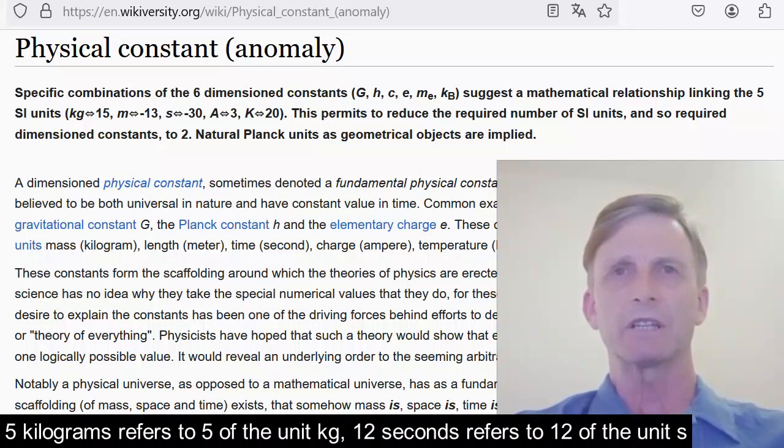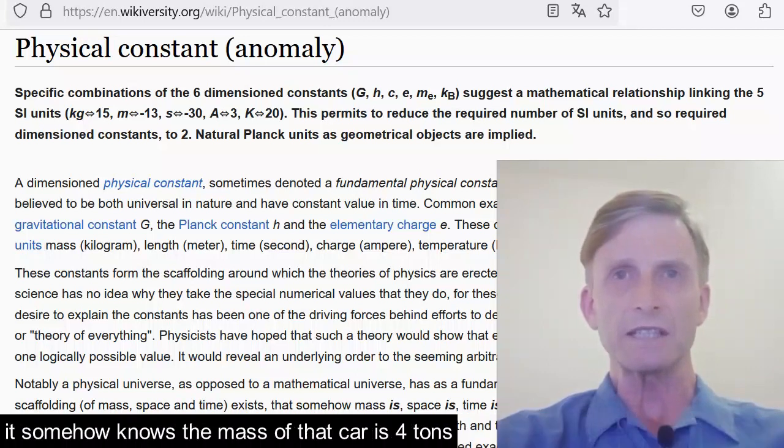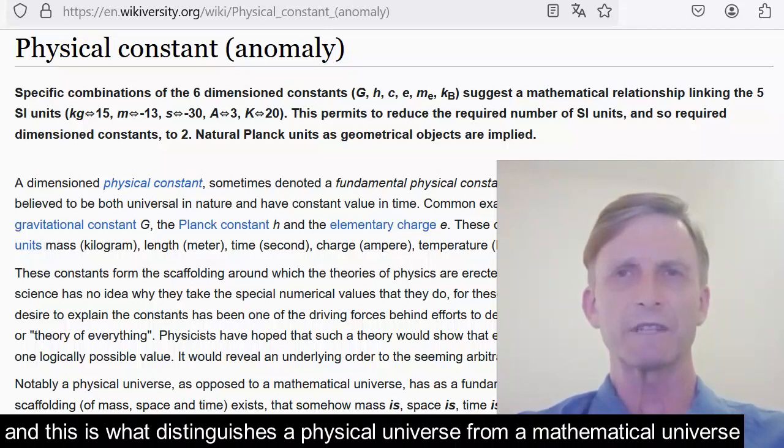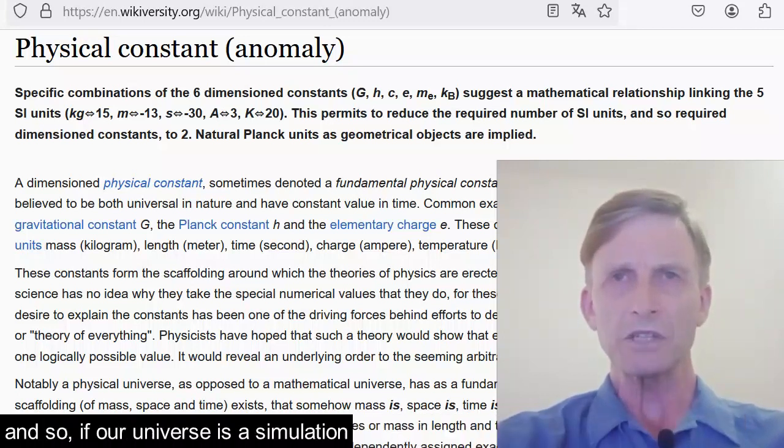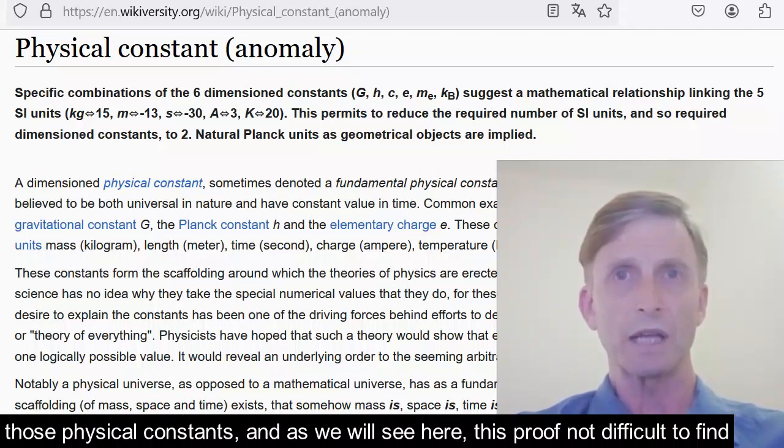Five kilograms refers to five of the unit kilogram. Twelve seconds refers to twelve of the unit second. The universe itself does not appear to do this; it somehow knows the mass of that car is four tons. This is what distinguishes a physical universe from a mathematical universe. If our universe is a simulation, then the proof will be within our measuring system and those physical constants. As we will see here, this proof is not difficult to find.